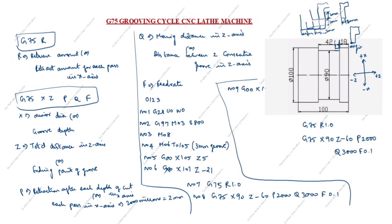N09: G00 Z00 X105 Z5. N10: G28 U0 W0 — return to home position.